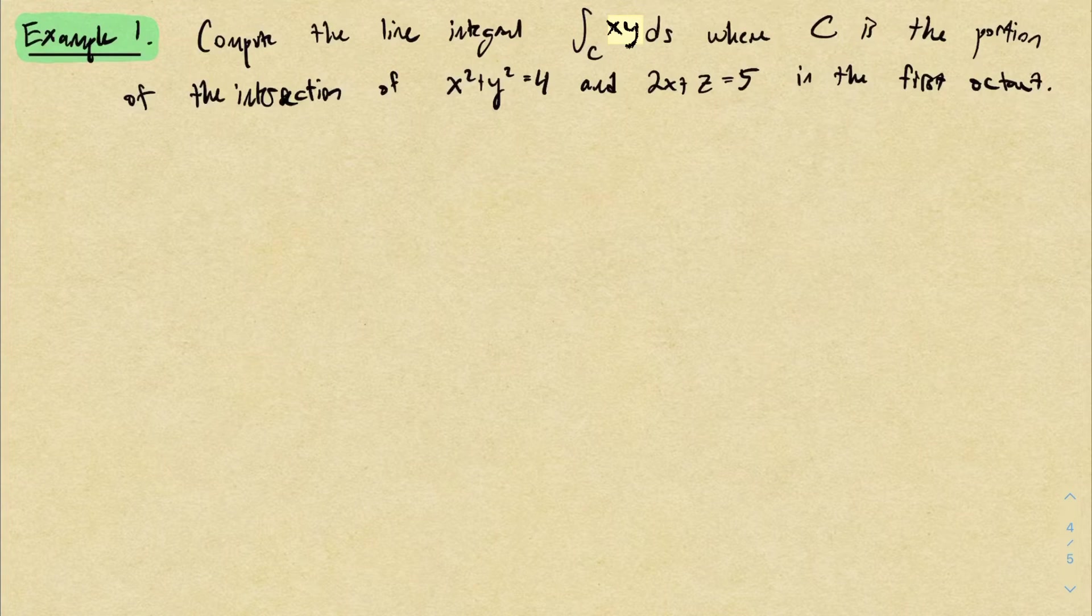All right, let's see this in action with a couple examples. In this first example we want to compute the line integral of xy over the curve C, where C is the portion of the intersection of two surfaces in the first octant. I gave myself two surfaces: one of them is x squared plus y squared equals 4, the other one is 2x plus z equals 5, and their intersection is going to be some curve sitting in space. We care about the portion of that curve in the first octant.